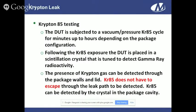The other method is Krypton 85. Similarly, the device is subjected to a vacuum and then high pressure with Krypton 85 gas, which is a radioactive gas — for minutes up to hours depending on the package configuration. Following the Krypton 85 exposure, the device is placed in a crystal tuned to detect gamma radioactivity. The presence of Krypton gas is detected through the package walls and body, so Krypton does not have to escape from a leak to be detected. If it's in the package cavity, the detection crystal will find it.